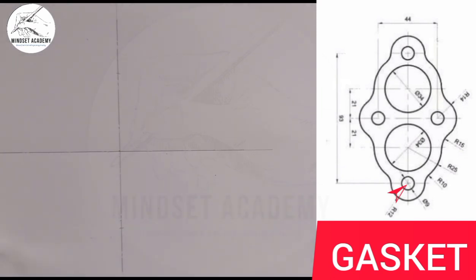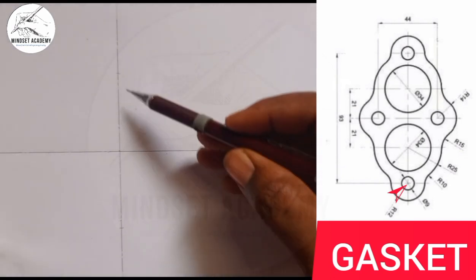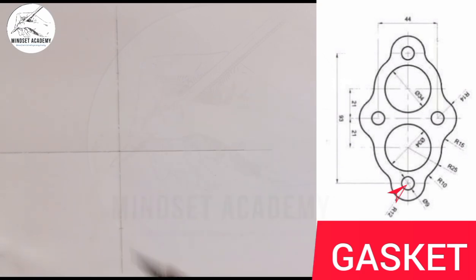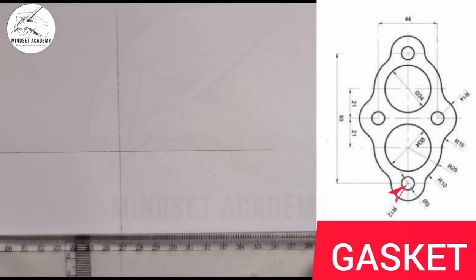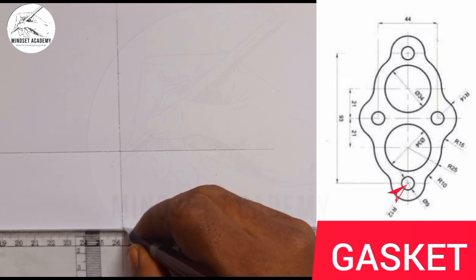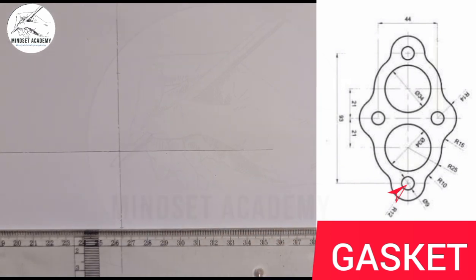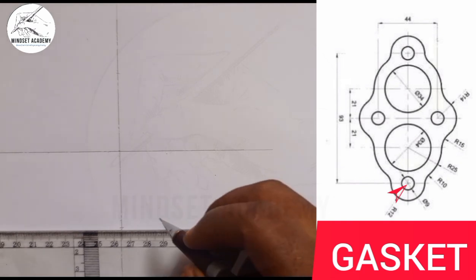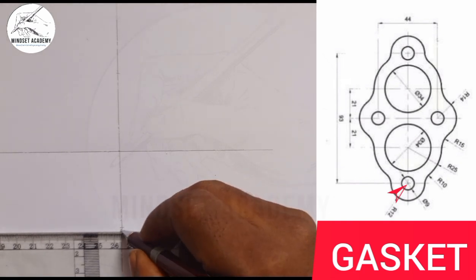After getting the center — meaning from here to here is 93 — I'll now draw the center line at that point.